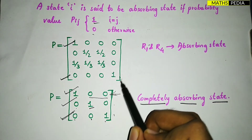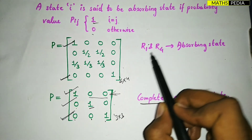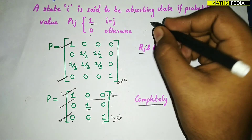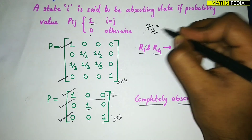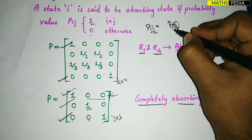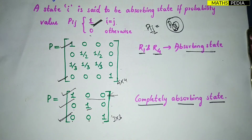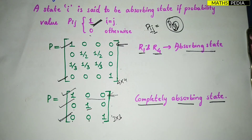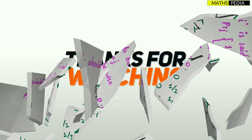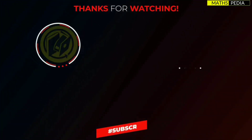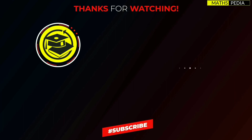But in the 4×4 matrix case, we can say that R1 and R4 are in absorbing state, while the other rows are not. Because the criteria is: Pij means you have to check the i and j values — if i equals j, that value should be 1. We have to see each and every row and then decide whether it is an absorbing state or not.